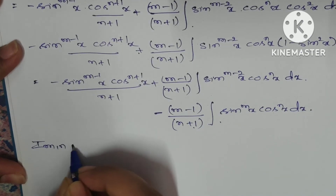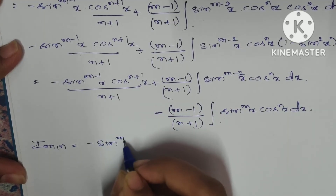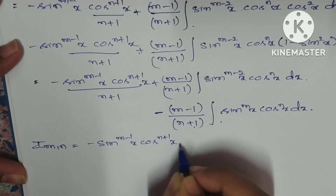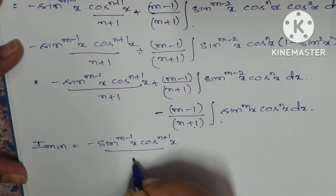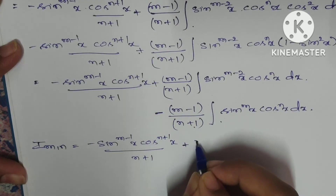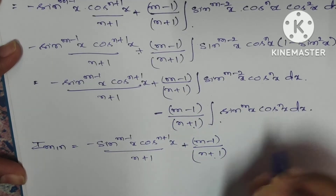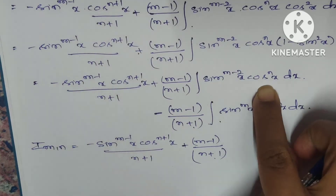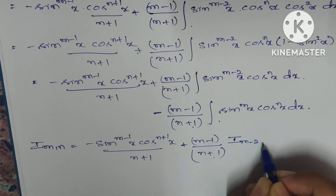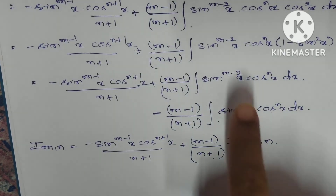So I(m,n) equals -sin^(m-1)(x)·cos^(n+1)(x)/(n+1) + (m-1)/(n+1) · I(m-2, n), since ∫sin^(m-2)(x)·cos^n(x) dx = I(m-2, n) by equation 1.